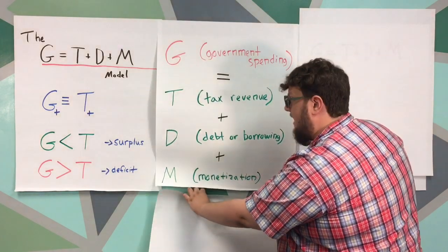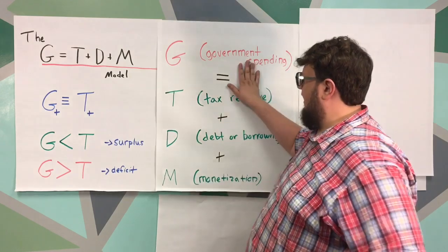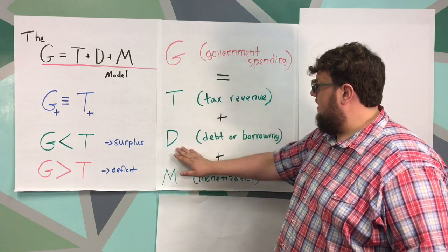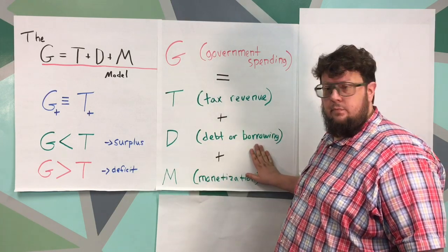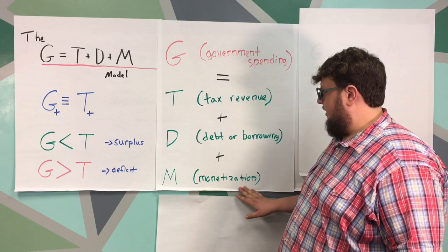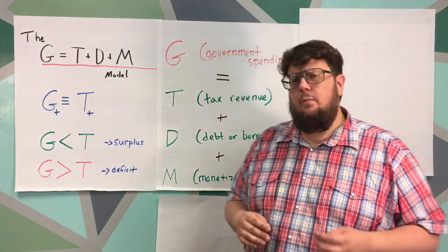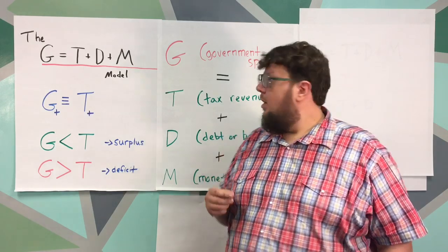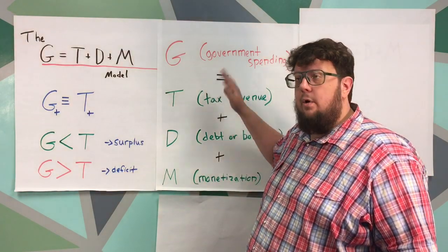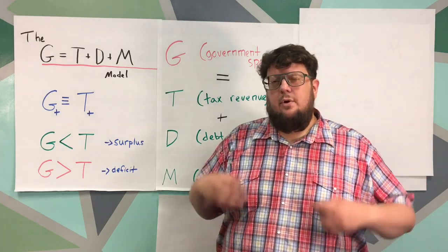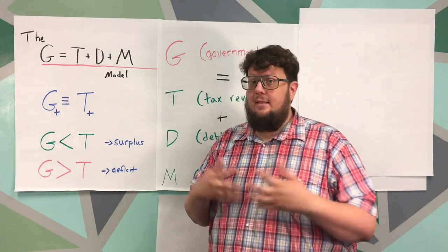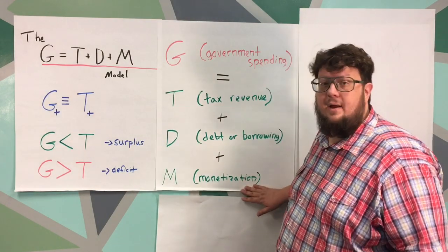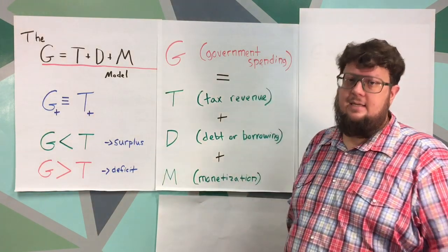The G stands for government spending. We already said that. The T stands for tax revenue. D stands for debt or borrowing, and M stands for monetization. Now monetization we're going to define that as when the government is printing money for the purposes of paying for government spending or for the purposes of perhaps paying off debt. So there are multiple reasons the government may expand the money supply, but in this case monetization is due to the government needing to print money in order to directly spend it.